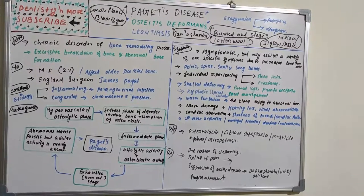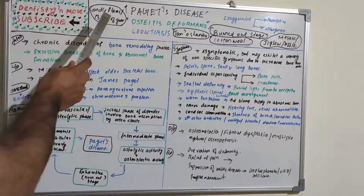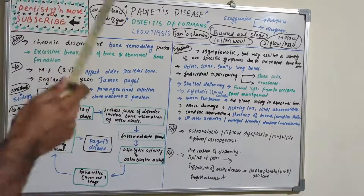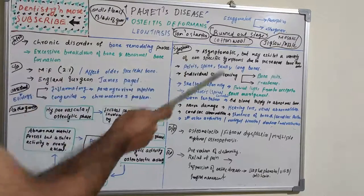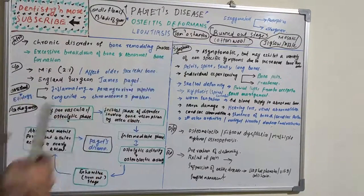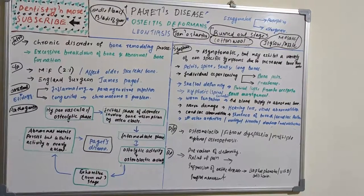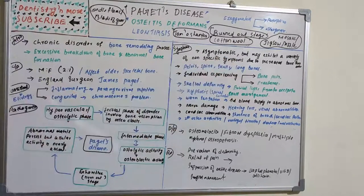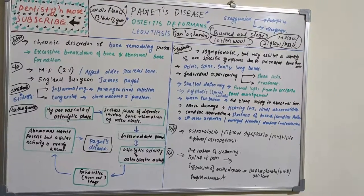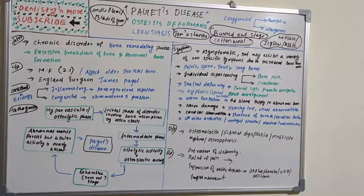The key takeaway points are: the candle flame or blade of grass appearance in radiography; the burnout stage in pathogenesis; cotton wool appearance of the skull in radiography; tam o'shanter hat appearance due to widened diploic space and enlarged skull; and mosaic or jigsaw puzzle appearance in histology. Paget's disease involves a mixed osteoclastic and osteoblastic effect causing improper bone formation and resorption.